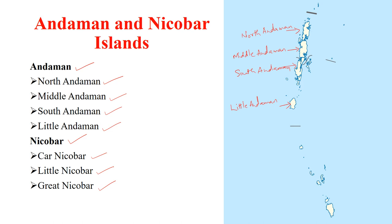Now coming to the Nicobar group, the three important islands in this group are: this one is Carnicobar, and this one is Little Nicobar, and the southernmost island is Great Nicobar Island.